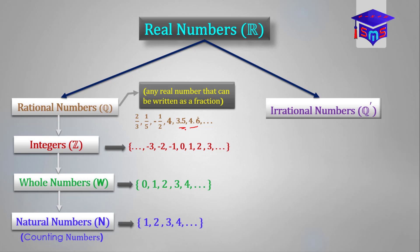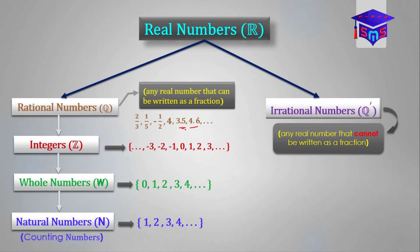Now let's talk about irrational numbers. Any real number that cannot be written as a fraction, or any real number that cannot be written in the form A over B, is an irrational number. Examples include e, pi, root 2, root 3, root 5. In fact, the square root of all prime numbers are irrational numbers, because their decimal forms are non-terminating and non-recurring.